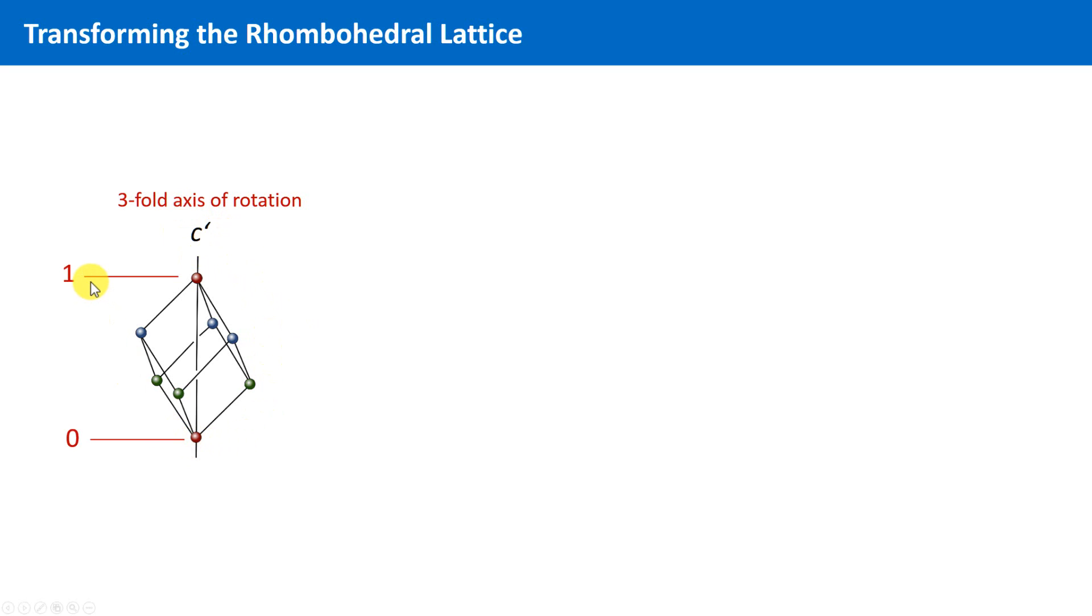0 and 1 for the red points, one third for the green ones, and two thirds for the blue ones. The green and blue ones are transformed into each other by this threefold axis of rotation. We keep this in mind for a while.